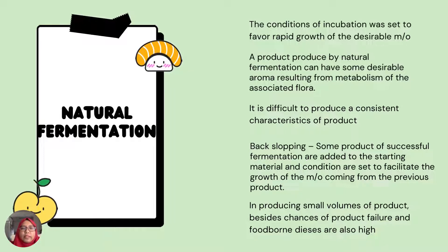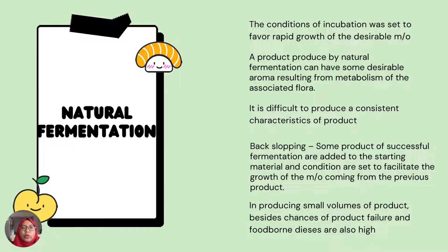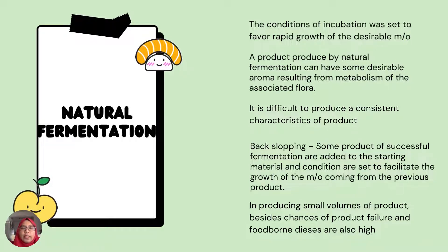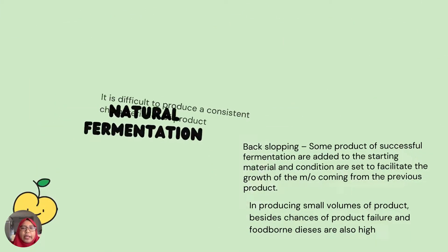In back-slopping, some products of a successful fermentation are added to the starting material, and conditions are set to facilitate the growth of microorganisms coming from the previous product. Back-slopping is commonly used for bread — the previous batch is used as a starter culture for the current batch. However, when producing small volumes of food product, the chances of product failure and foodborne disease are also high.